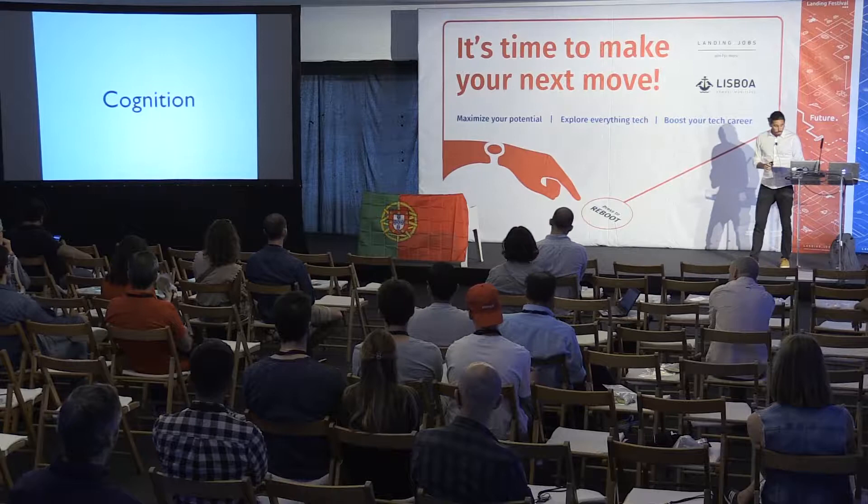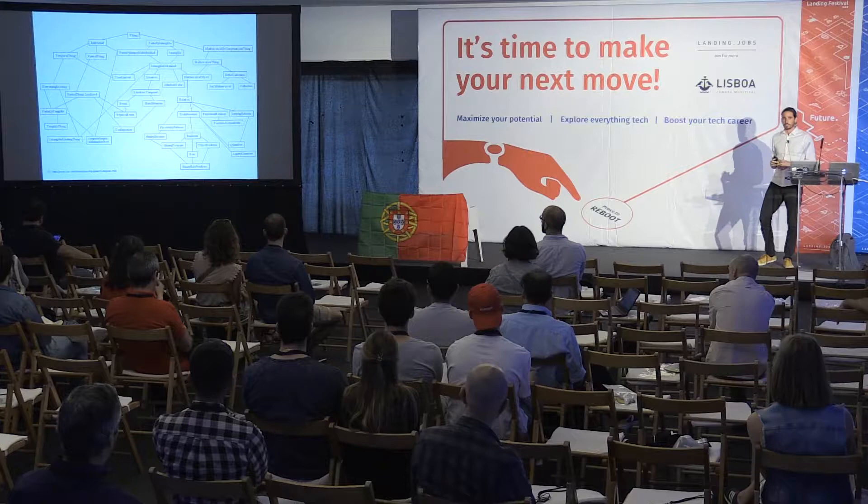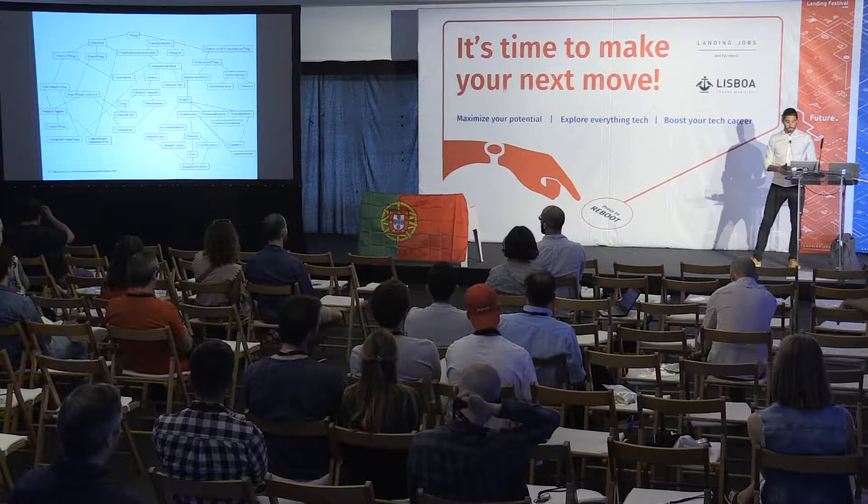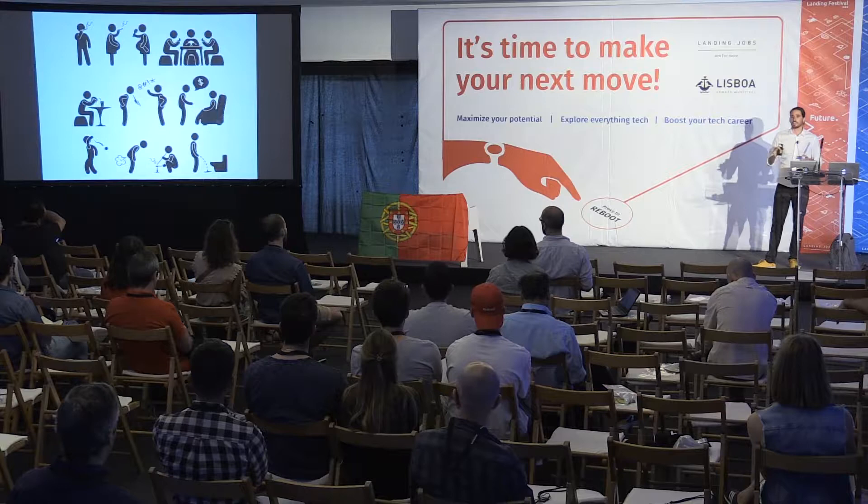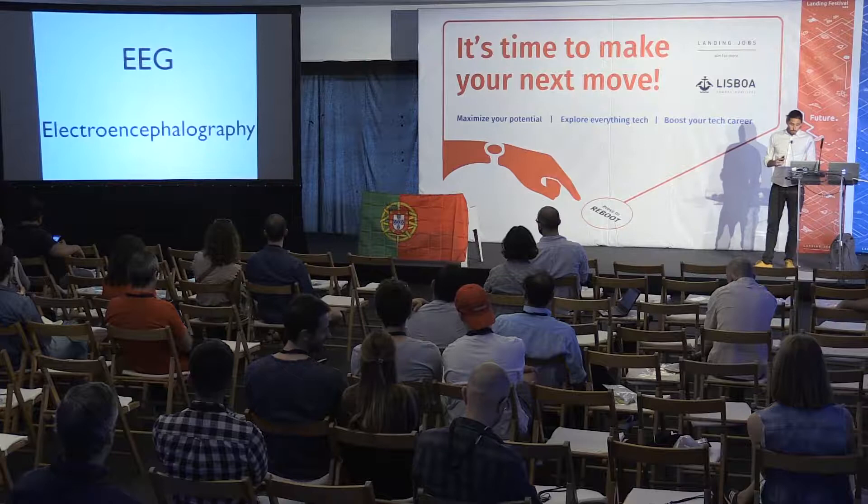In the end, you have the cognitive layer, so all the processes — the electric, the chemical, and the anatomical layers — allow these intangible processes to happen: the psychological processes. And in the end, you have behavior. So all of these layers exist for behavior to happen.